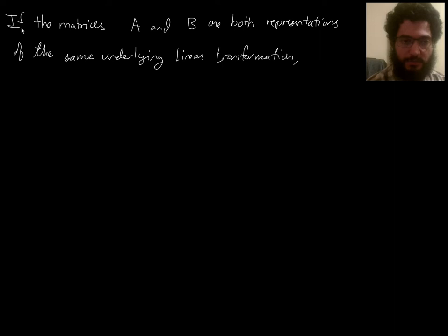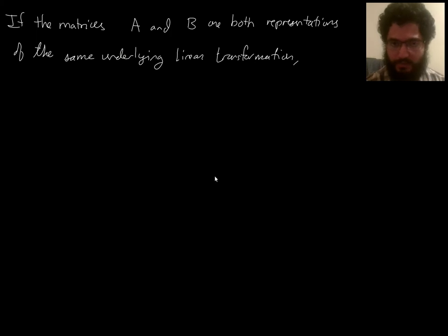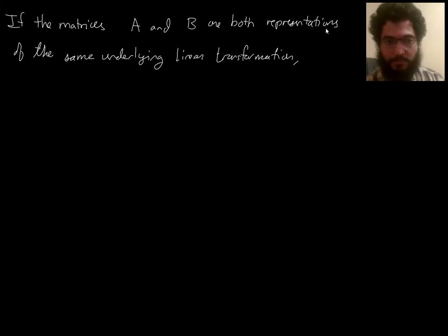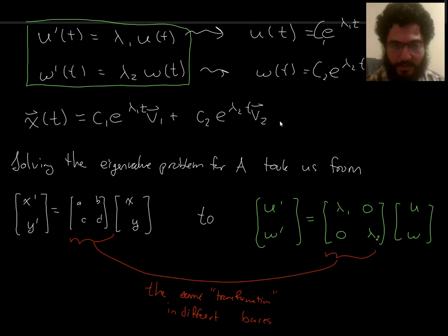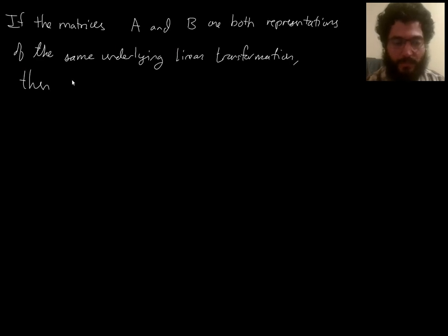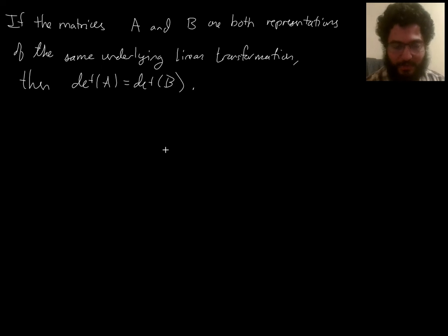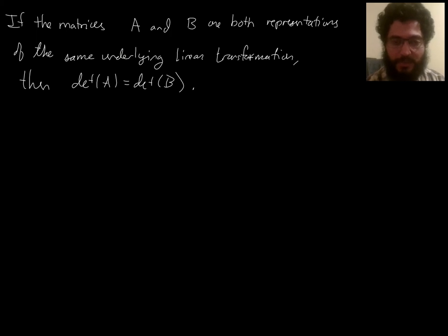Here's something we need to know in order to use it — a general linear algebra fact. If you have two matrices A and B, and they are both representations of the same underlying linear transformation, then they have the same determinant. So the determinant is an invariant of the underlying linear transformation. It doesn't matter what basis you use to represent a linear transformation — whether it's matrix A or B — you get the same determinant.